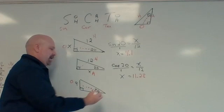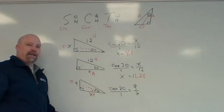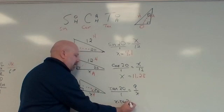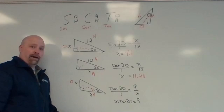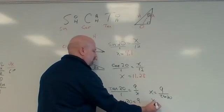Tangent 20 equals opposite over adjacent. Now, this is the first case where I gave you one where the X is on bottom. And so when I cross multiply, I get one times nine is nine. X times tangent 20 is X times tangent 20 equals nine. I can't solve for X that way. So I have to divide tangent 20. So I'm now getting X equals nine divided by tangent 20.